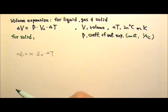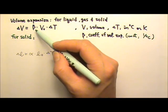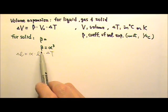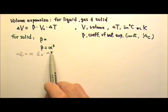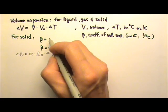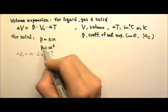For a solid, it has both alpha and beta. How do you think alpha and beta are related? Some may think that beta is alpha cubed, because one is for volume and the other is for length. However, the beta of a solid is about three times alpha, not alpha cubed.